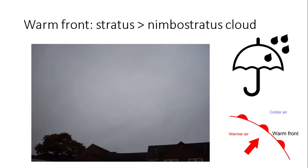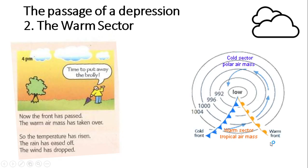At the warm front, we'll see stratus cloud - a layered cloud. It's called nimbostratus when it starts to rain. In the warm sector, it may stop raining and the temperature may rise. We're in an area of possibly tropical maritime air mass in the wedge between the warm front and the cold front.